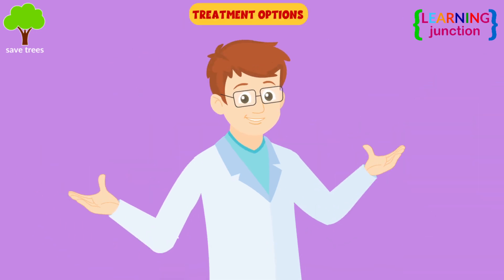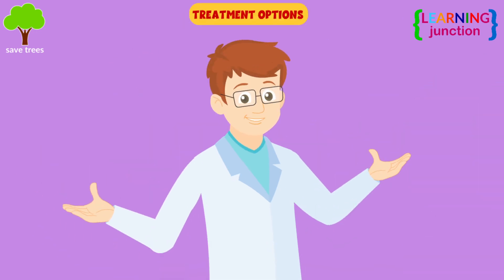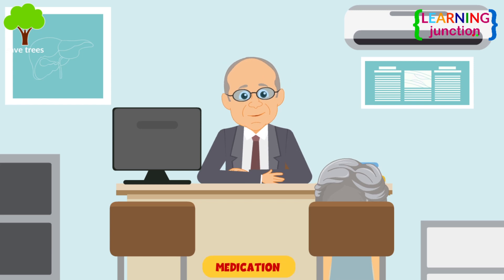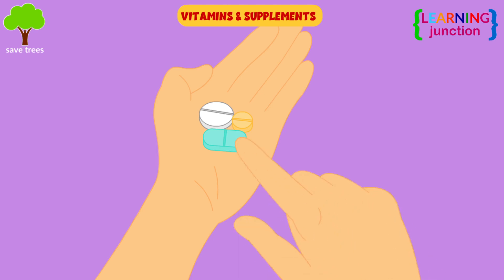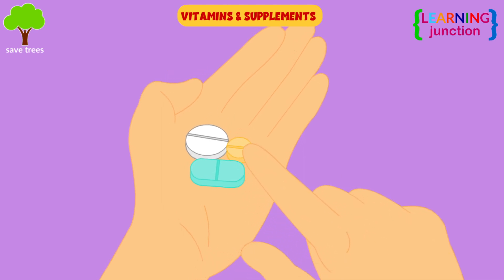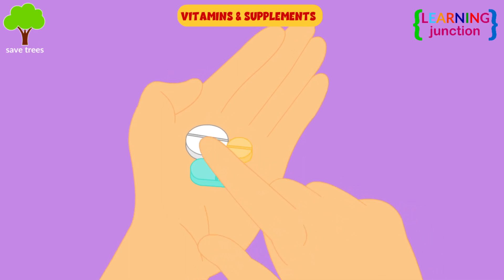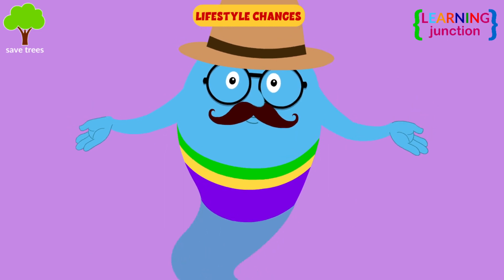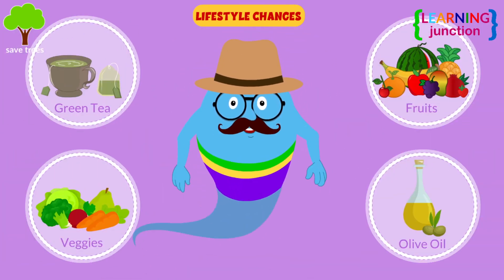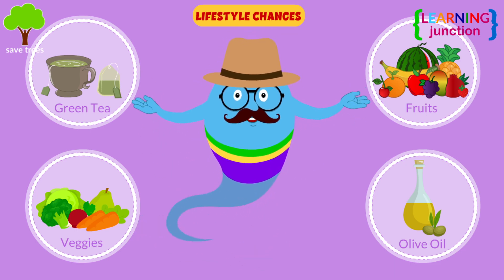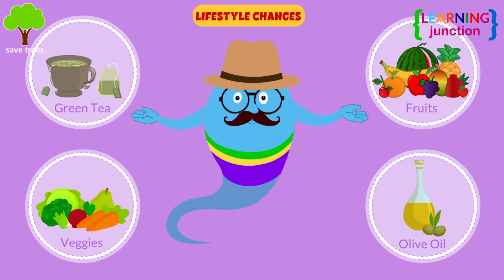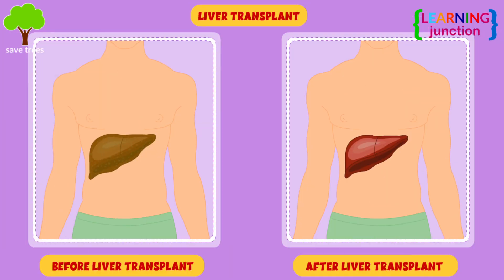Some common treatment options include medications — doctors treat some types of liver disease with medication, and vitamins and supplements may also be needed. Lifestyle changes: a person in the early stages of disease may need to eat more calories and protein. Liver transplant: a transplant replaces the defective liver with a healthy liver.